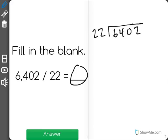So basically what we're asking ourselves with this division problem is how many groups of the divisor, in this case 22, can we fit into the dividend, in this case 6,402.